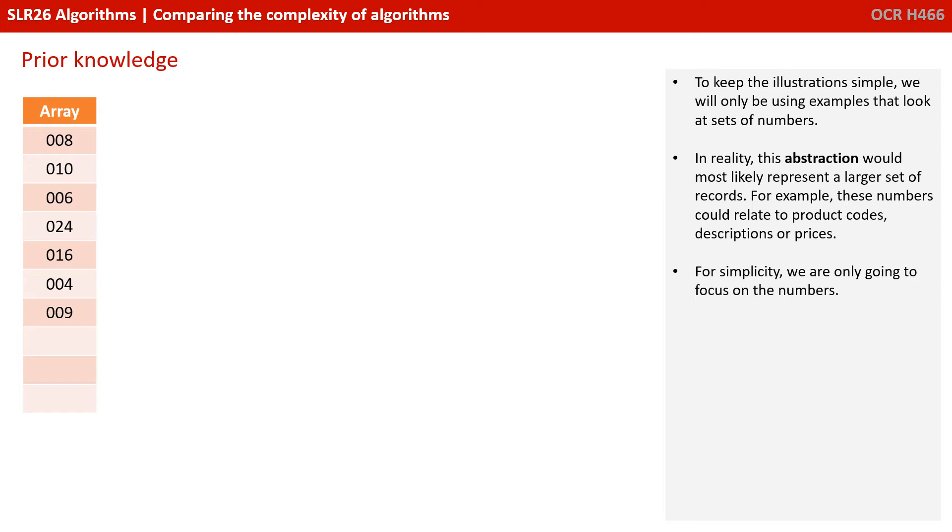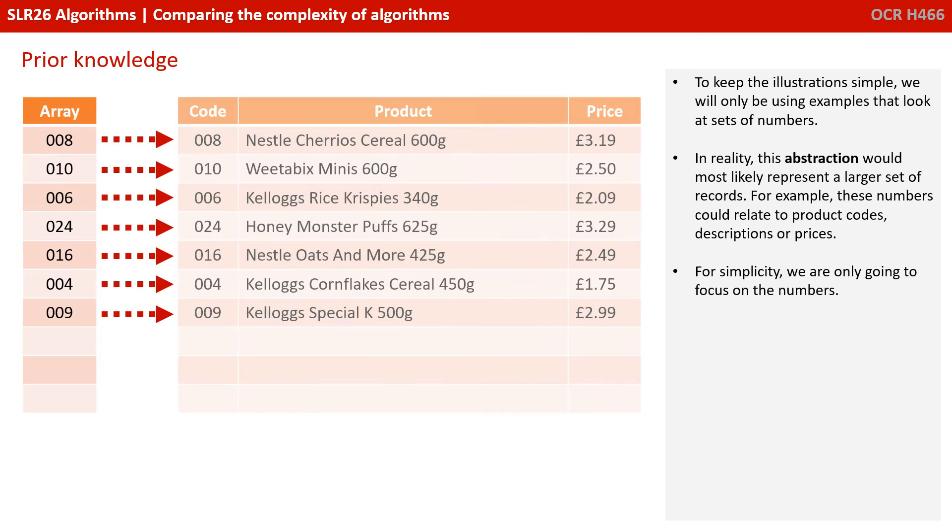To keep the illustrations simple we're only going to be using examples that look at a set of numbers. In reality this abstraction would most likely represent a larger set of records. For example, these numbers could relate to product codes, descriptions and their prices. For simplicity we're only going to focus on the numbers.